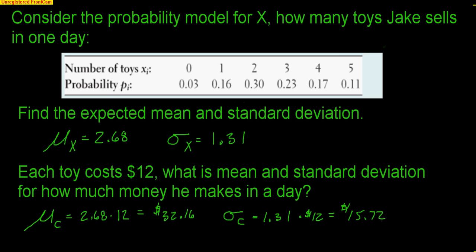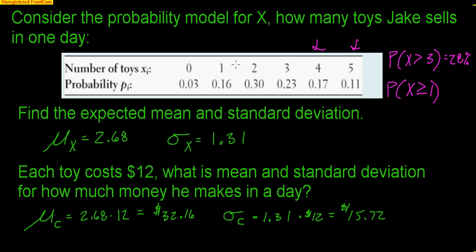With these probability models, I could also ask probability questions. For example, what's the probability he sells more than 3 t-shirts? More than 3 means 4 or 5, so add 17% plus 11% — the probability is 28%. Or, what's the probability he sells at least 1? At least 1 means 1 or more. Rather than adding up 16%, 30%, 23%, 17%, and 11%, the easier way is 1 minus 0.03, giving a 97% chance he sells at least 1 t-shirt.